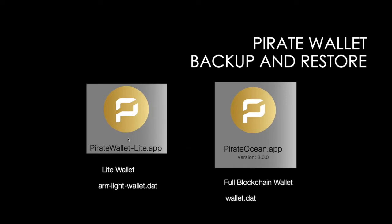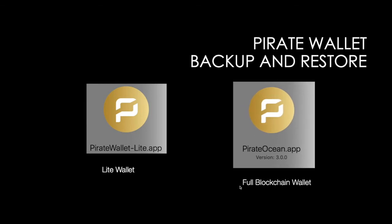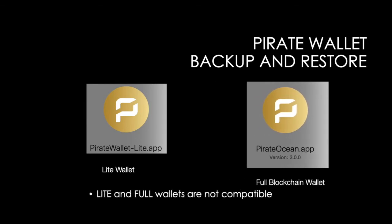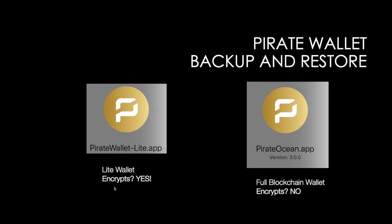To give you a comparison between the Pirate Lite wallet and the Pirate Ocean full node wallet: the full node wallet downloads the entire blockchain, which is probably now about 9 or 10 gigabytes. The Pirate Lite does not. The Pirate Lite has a wallet file called arr-light-wallet.dat, whereas the Pirate Ocean app stores the wallet in a different directory and that file is called wallet.dat. Also, the two wallets are not compatible, so you can't use one for the other. The Lite wallet encrypts, but the full node wallet does not encrypt — you cannot encrypt it.